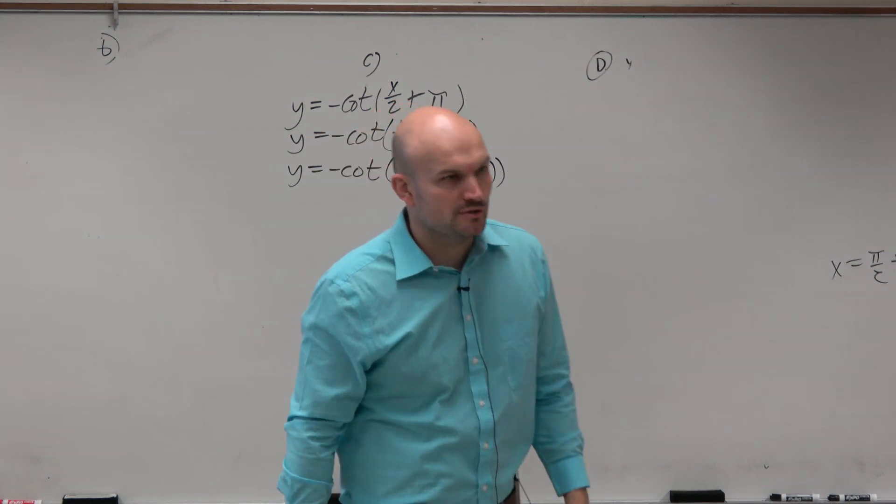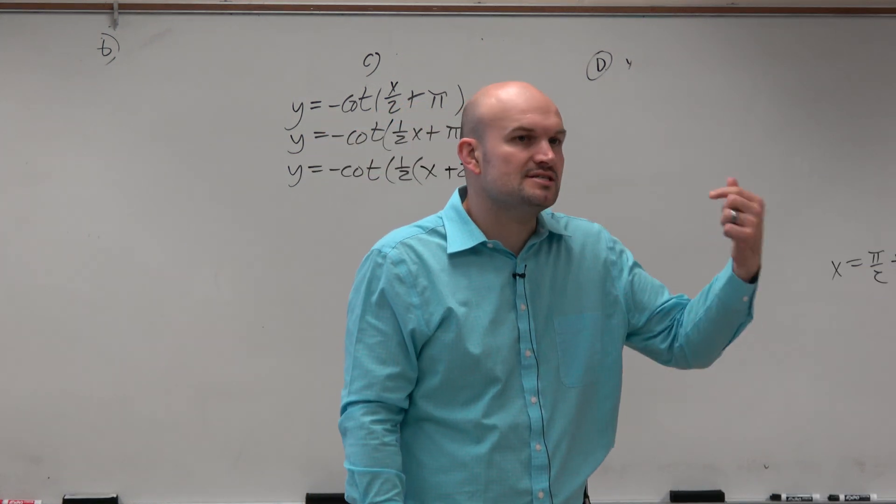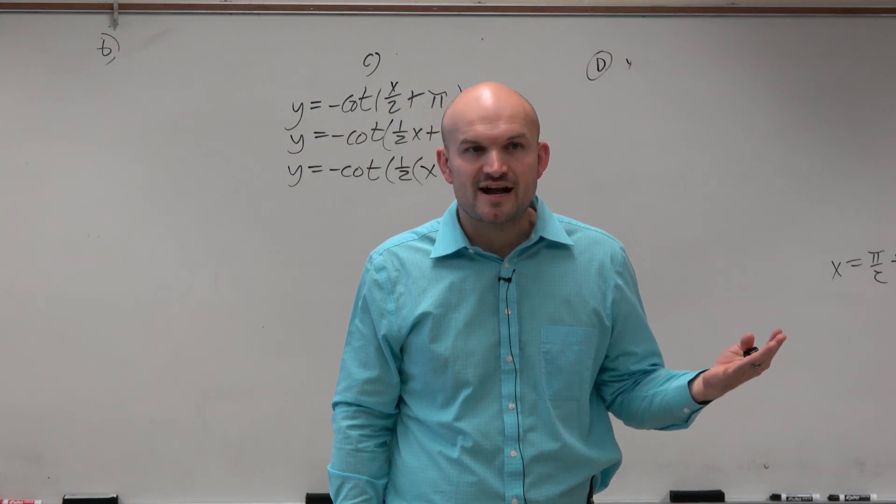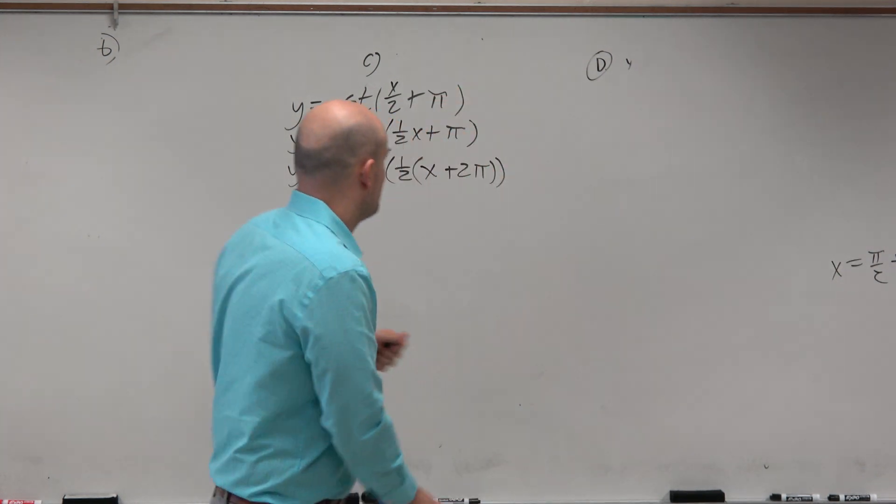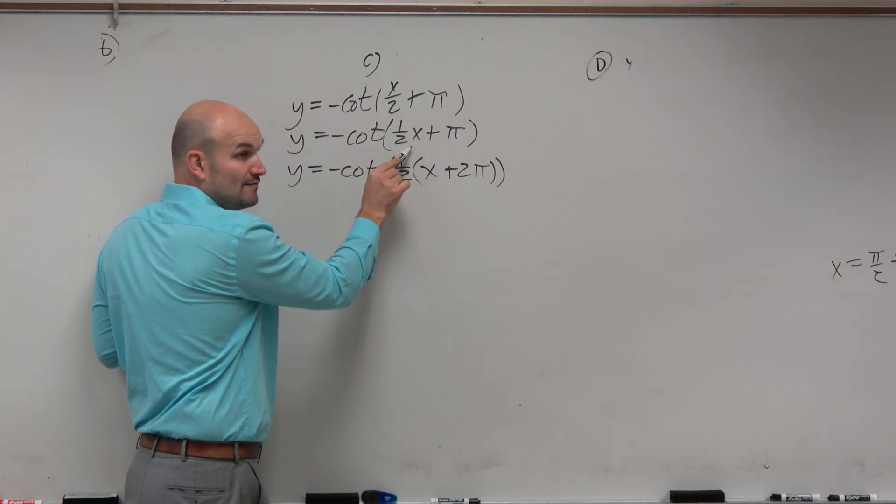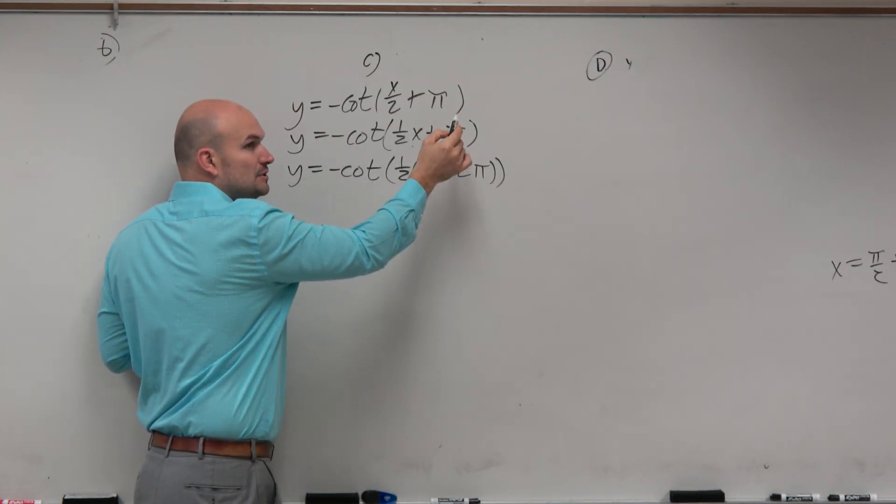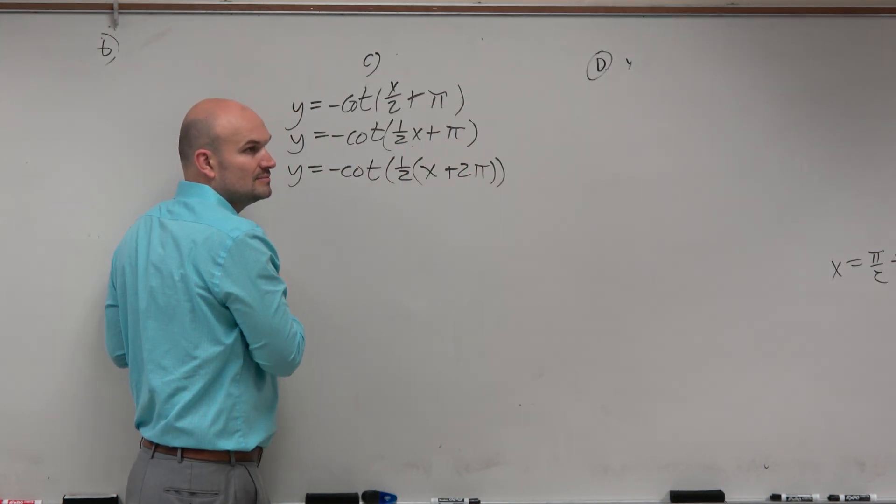And again, the best thing you should do on a test or a quiz or your homework is just double check your work. The best thing about factoring is you can just multiply it back to make sure it works. 1 half times x gives you 1 half x. 1 half times 2 pi gives you pi. So I did it correct.